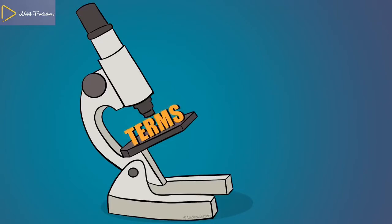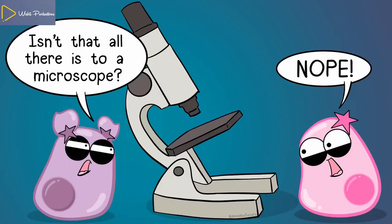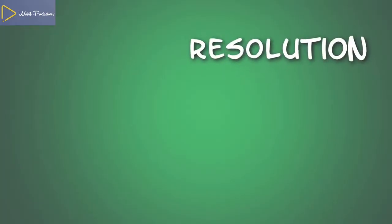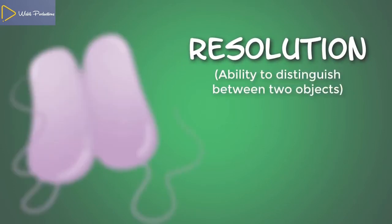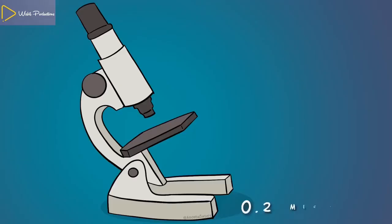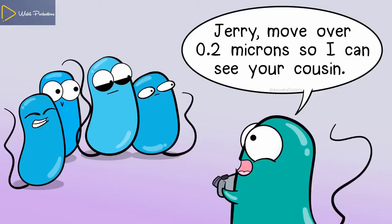First of all, let's focus on a few terms that are important in order to understand microscopes. Magnification is one — that's really what most people think of when they think of a microscope. Another important term is resolution: basically, are you able to distinguish between two objects? Two objects could look like one object if you can't distinguish between them. For example, if a microscope had a resolution of 0.2 microns, then two objects need to be 0.2 microns or more apart in order to see them as two different objects.